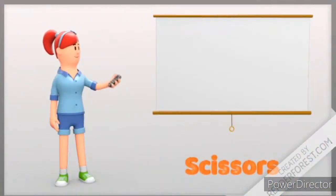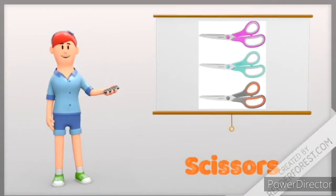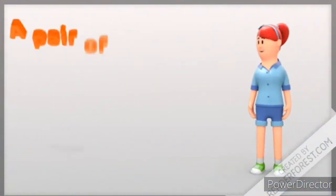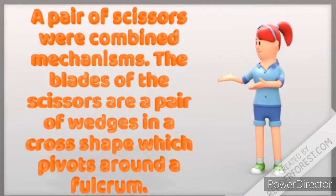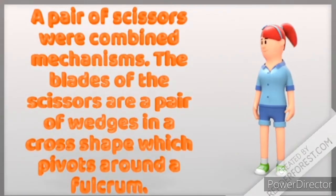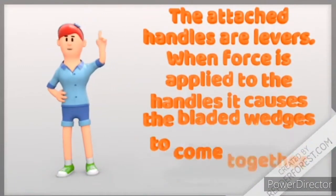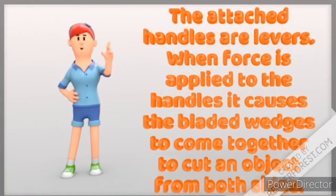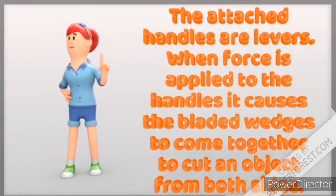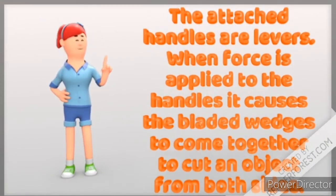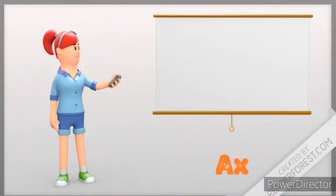Number two, scissors. Are scissors a compound machine? Scissors use combined mechanisms. The blades of the scissors are a pair of wedges in a cross shape which pivot around a fulcrum. The attached handles are levers. When force is applied to the handles, it causes the bladed wedges to come together to cut an object from both sides.